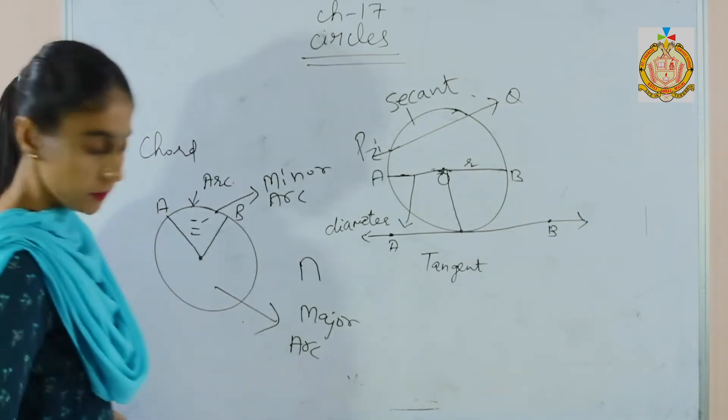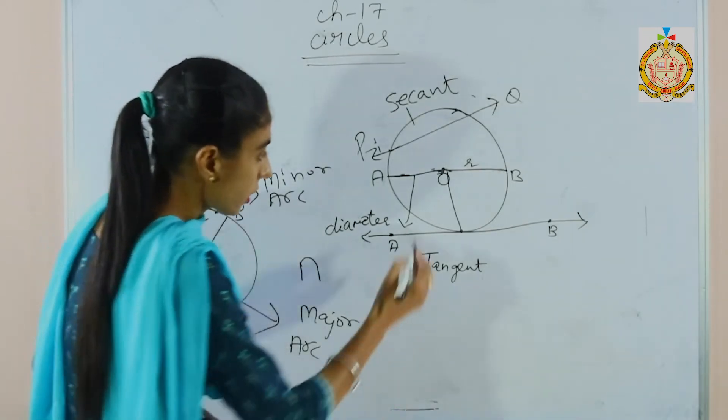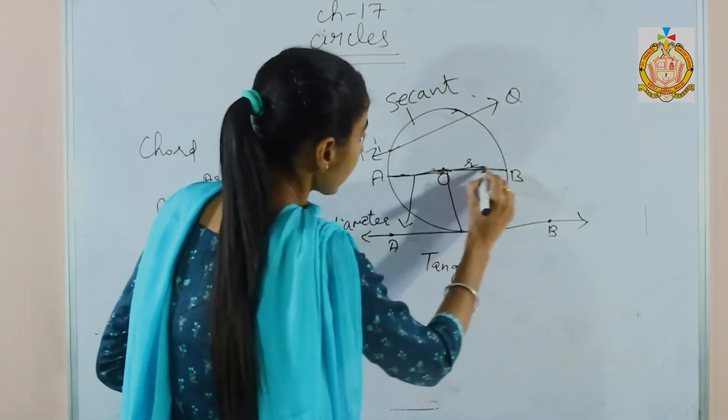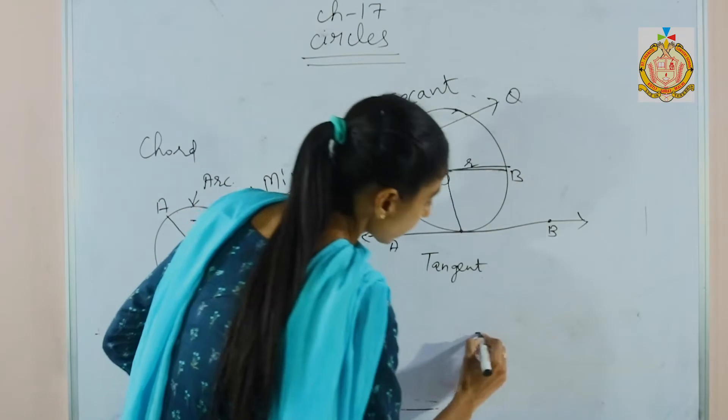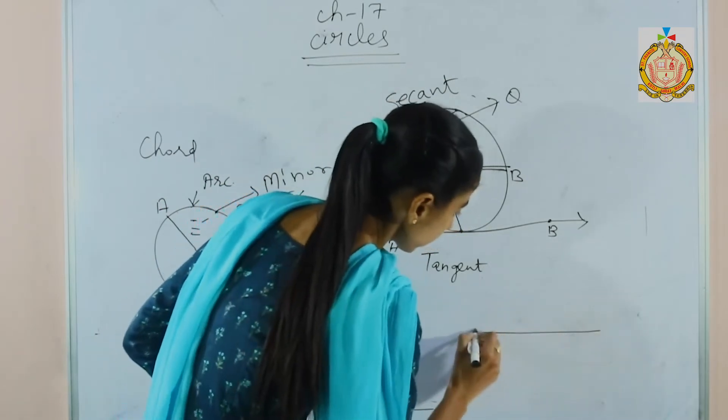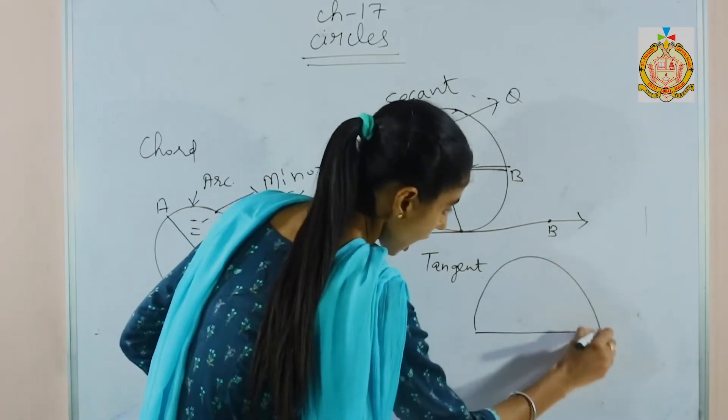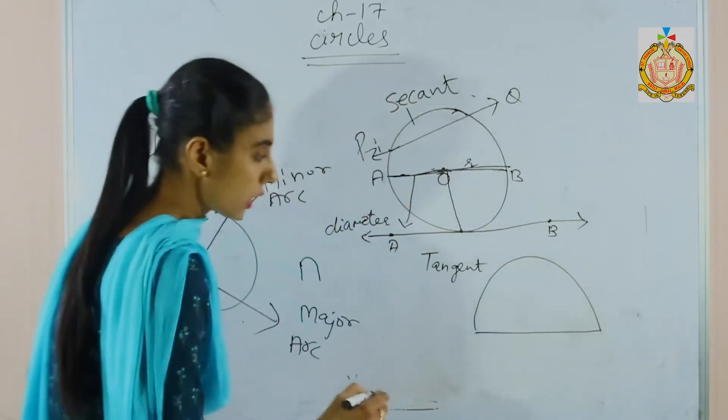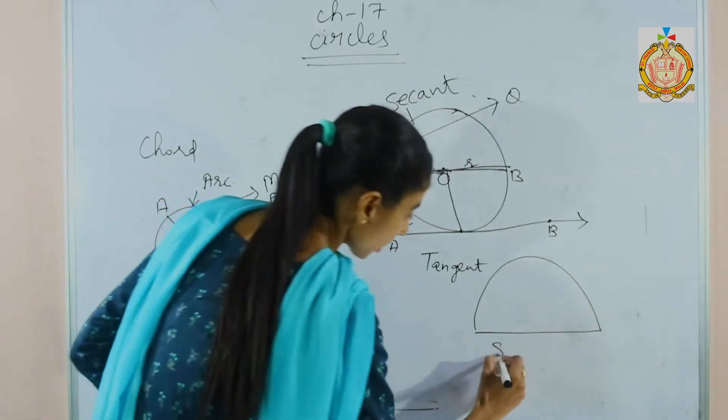Next is the semicircle. Half of the circle — the half portion is called a semicircle.